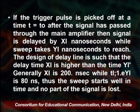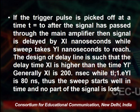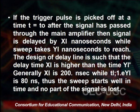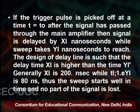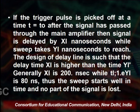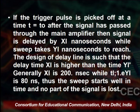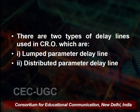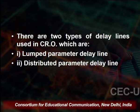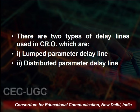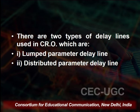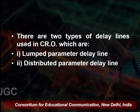Then the signal is delayed by x₁ nanoseconds while the sweep takes y₁ nanoseconds to reach. We delay the signal for a very short time in the order of nanoseconds. The design of the delay line is such that x₁ is higher than y₁ — generally x₁ is 200 nanoseconds while y₁ is 80 nanoseconds. Thus the sweep starts well in time and no part of the signal is lost. There are two types of delay lines used in the CRO: the lumped parameter delay line and the distributed parallel line.